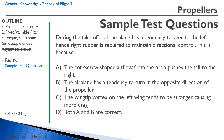Practice question: Through the takeoff roll, the plane has a tendency to veer left, requiring right rudder. Why? Option A: corkscrew-shaped airflow from the prop pushes the tail right — correct, nose goes left. Option B: the airplane has a tendency to turn opposite to the propeller direction — also correct, that's torque. Option C: wingtip vortex on the left wing is stronger, causing more drag — not correct, both wingtip vortices are equal strength. Option D: A and B are both correct answers.